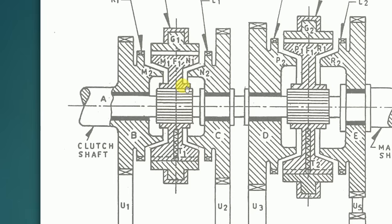The synchromesh device is internally splined — internal splines are present and these are in mesh with the external splines of the main shaft. The main shaft has external splines on this particular part which mesh with the internal splines of the synchromesh device. This device is actually a modification over the constant mesh gearbox. In the constant mesh gearbox we had a dog clutch, but in this gearbox we have a synchromesh device. Two such synchromesh devices are shown here: F1 and another one, and these two are identical with each other.